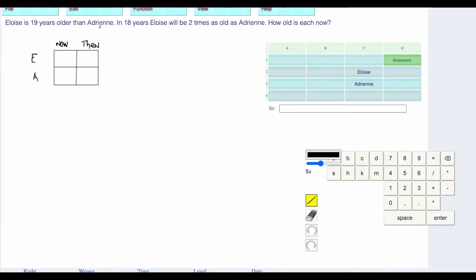Eloise is 19 years older than Adrian. Eloise is compared to Adrian. Adrian is X. Eloise is 19 years older, X plus 19.